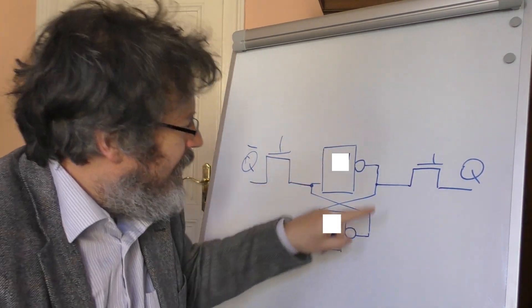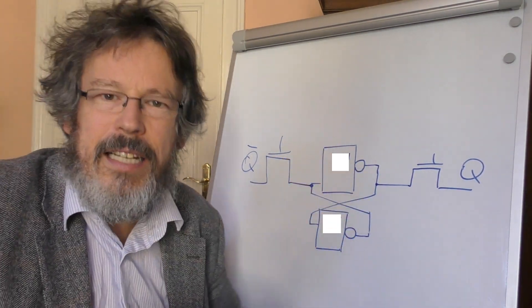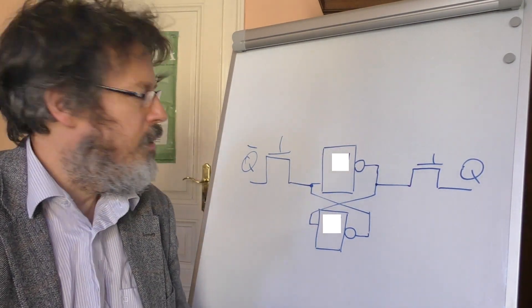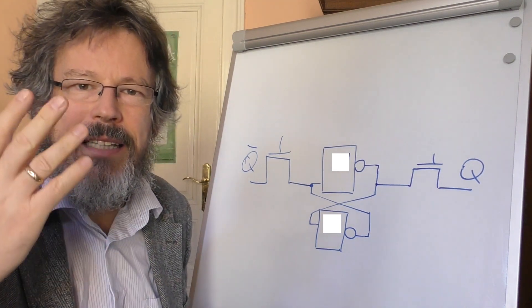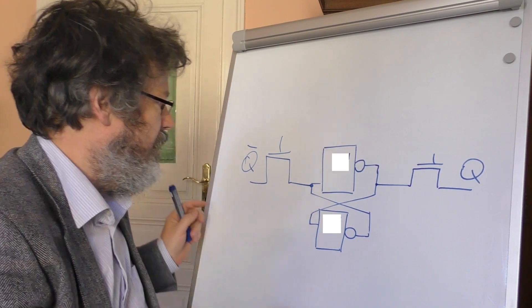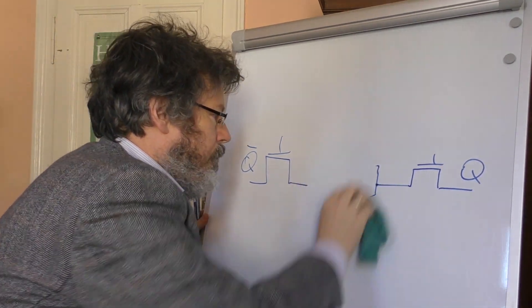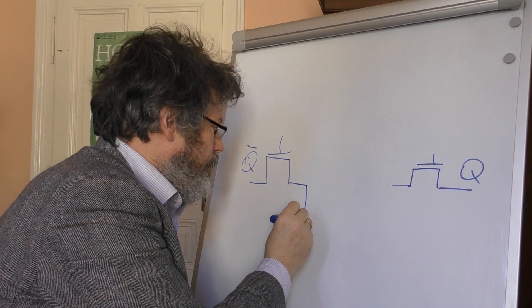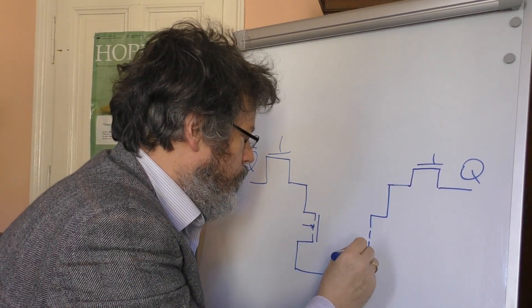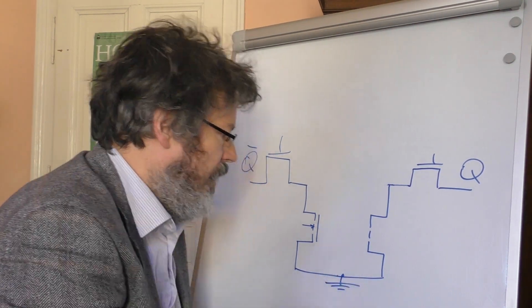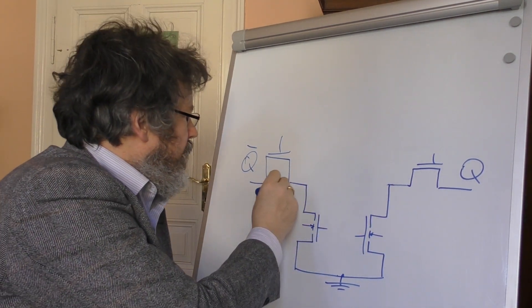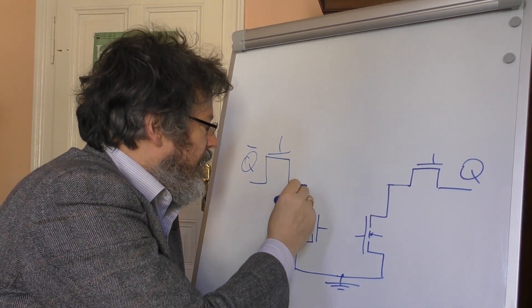And now you can think, can I formulate these inverters, which themselves consist of transistors, perhaps even more simply? And in fact it works by switching only two transistors with feedback coupling. This looks as follows: we have first a transistor here.